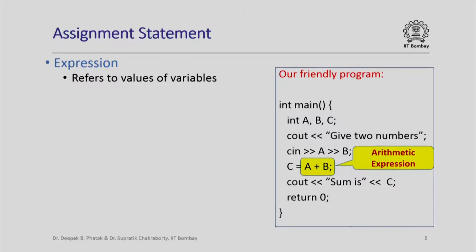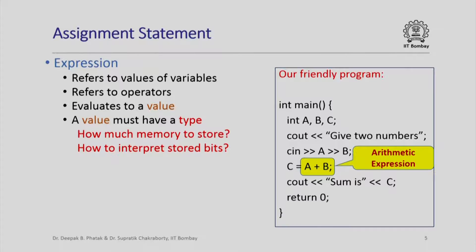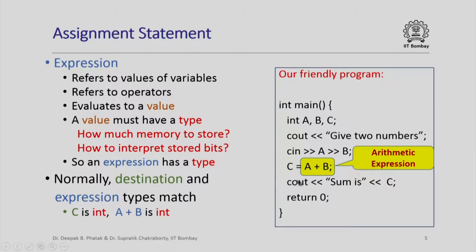An arithmetic expression in general refers to values of variables and operators — here we have the plus operator — and it evaluates to a value. For every value that the C++ program computes we must have a type, which tells the compiler how much memory to allocate and how to interpret the stored bits. Since an expression evaluates to a value and every value must have a type, an expression must have a type. Normally the type of the destination variable and the type of the expression on the right-hand side will match.